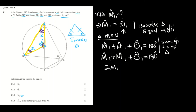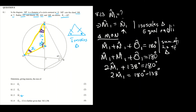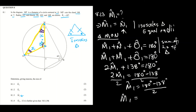We say angle M1 plus angle M1 plus O1 equals 180 degrees, giving us 2M1 plus 138 degrees equals 180 degrees. So 2M1 equals 180 minus 138, and dividing by 2, M1 equals 21 degrees.